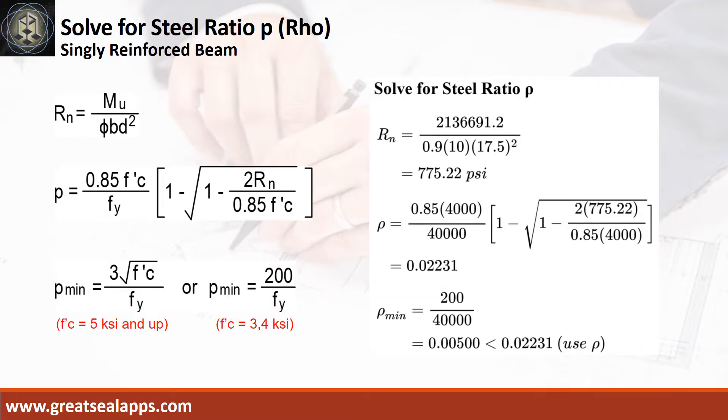Given Mu equals 2,136,691.2 inch-pounds, resistance factor equals 0.9, b equals 10 inches, and d equals 17.5 inches. The beam design ratio Rn equals 775.22 psi, and reinforcement ratio ρ equals 0.02231.